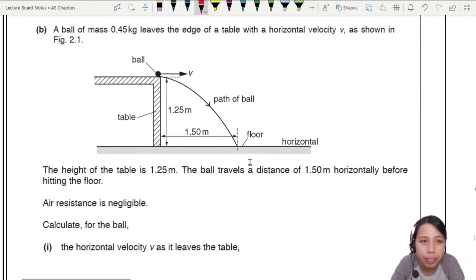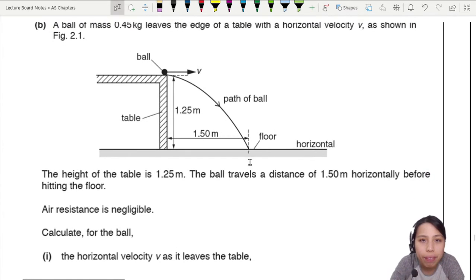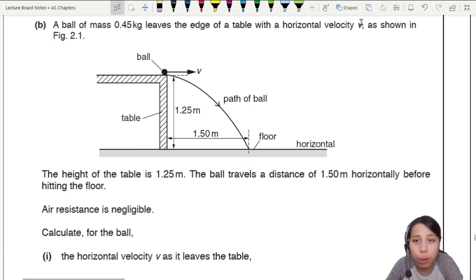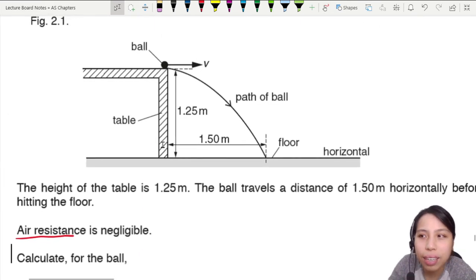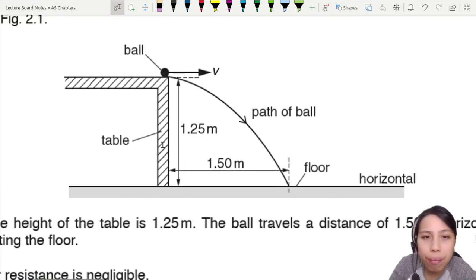Then we come to the projectile question. A ball of 0.45 kg leaves the edge of the table with horizontal velocity. The height of table is 1.25 m and the ball travels 1.50 m horizontally before it hits the floor. Air resistance is negligible. No need to worry about weird things. We can use our STUVA equations if air resistance is negligible. So we need to calculate first the horizontal velocity of the ball as it leaves the table. Before we go to the calculation, stare carefully at this scenario.